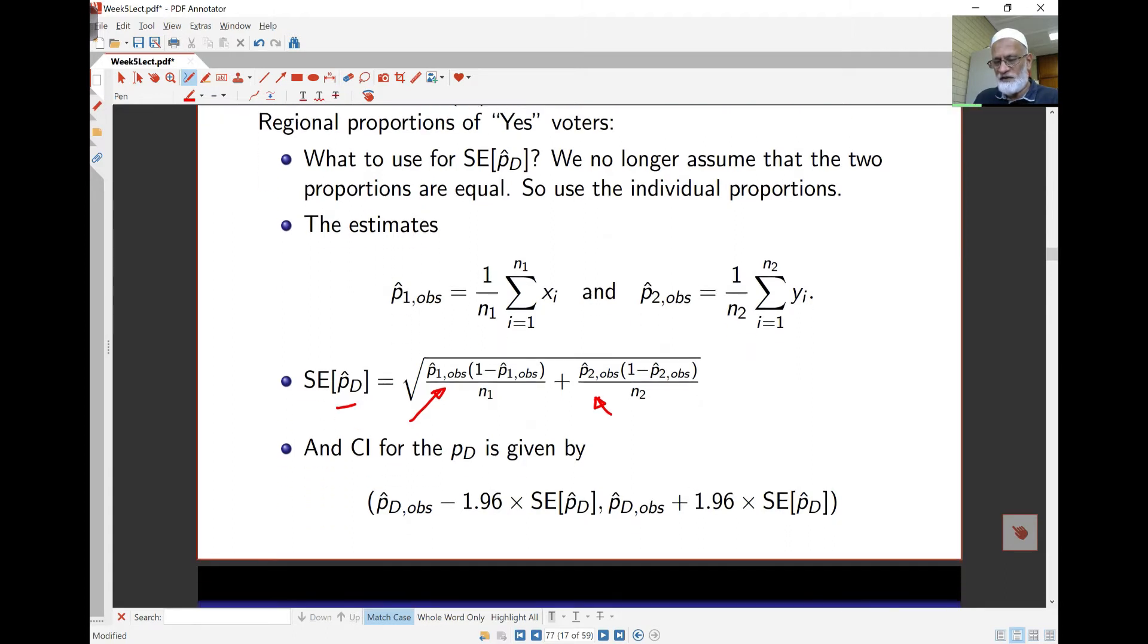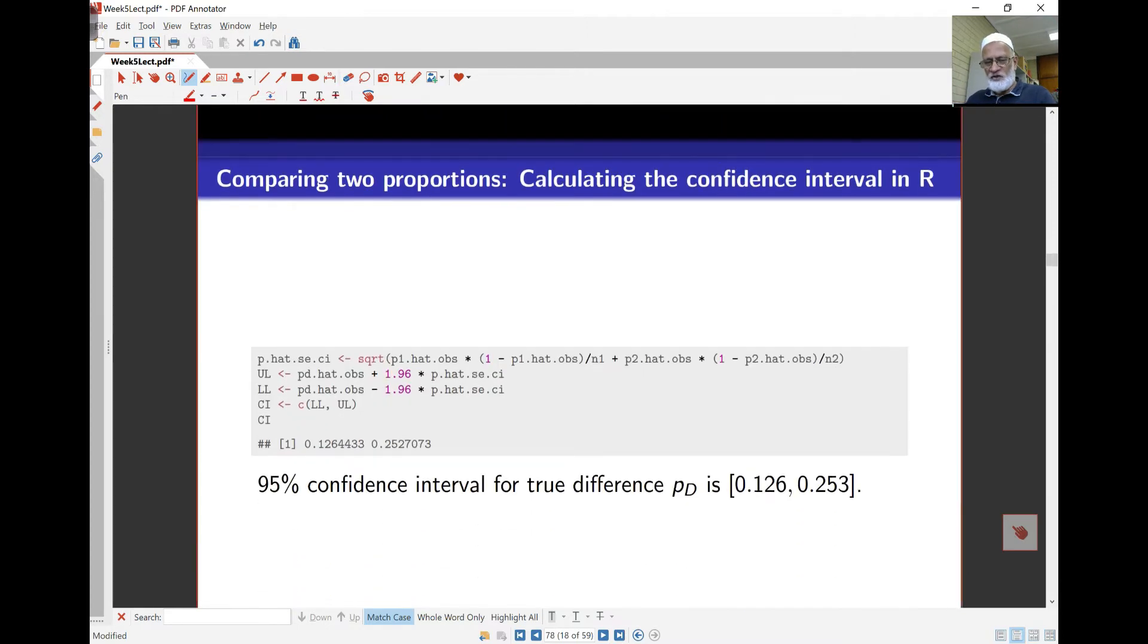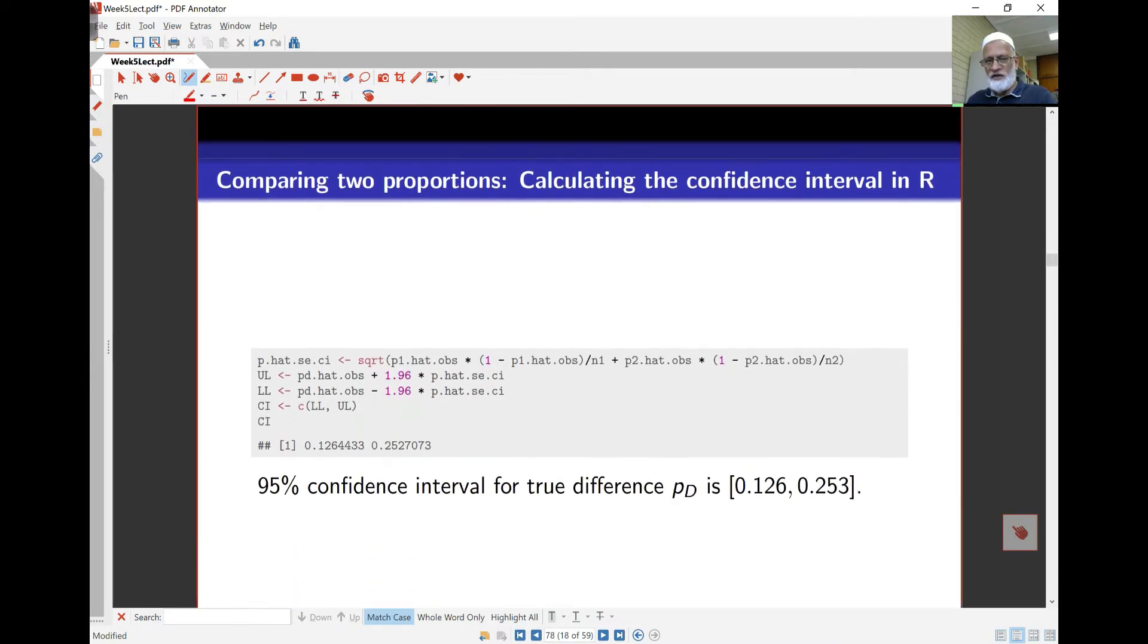The confidence interval here is still going to be the difference, because we're looking for the confidence interval of a difference, the difference in the two minus 1.96 times standard error, and the difference in the two with a plus sign in the middle. Nothing else changes. So here's the calculation for that based on our data from the sample.